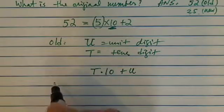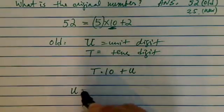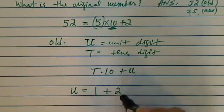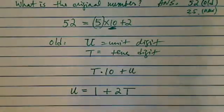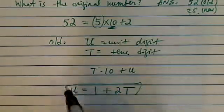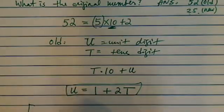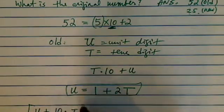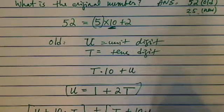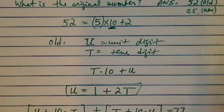The first equation says the unit digit equals one greater than twice the tens digit. That's the first equation. The second equation says the old number, which is U plus 10 times T, plus the new number, which is T plus 10 times U, equals 77.